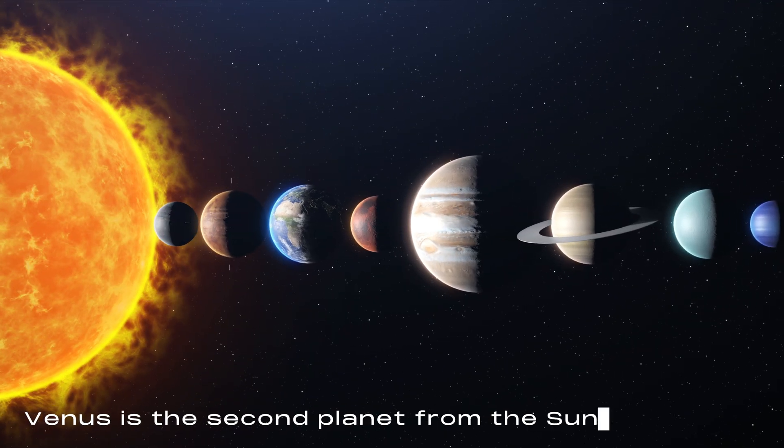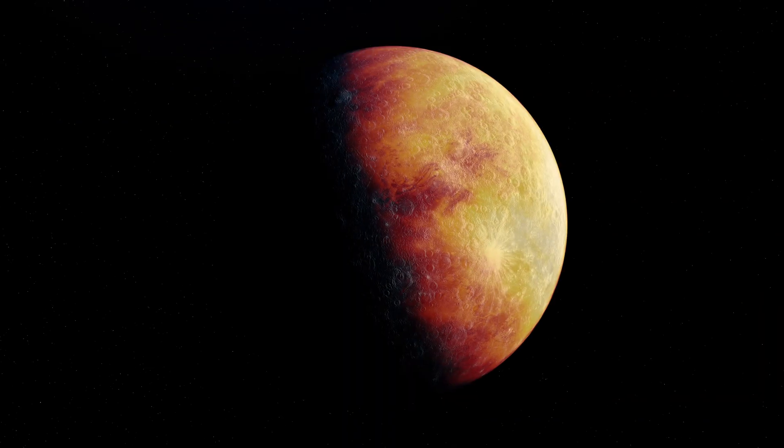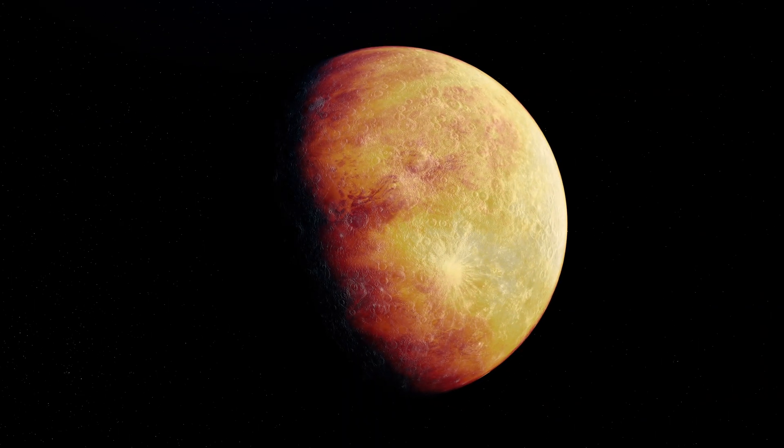Venus is the second planet from the Sun and is often referred to as Earth's twin due to its similar size and composition.